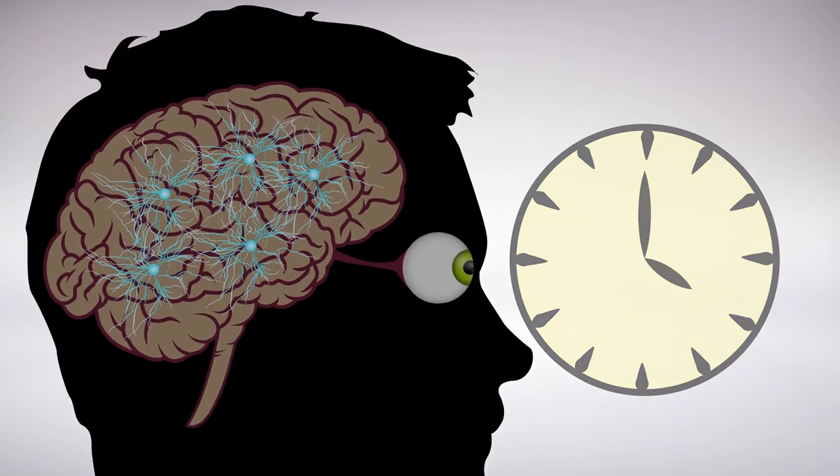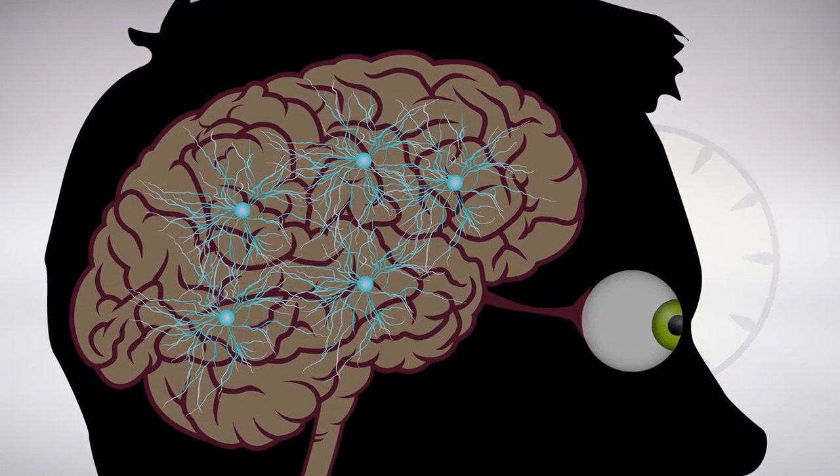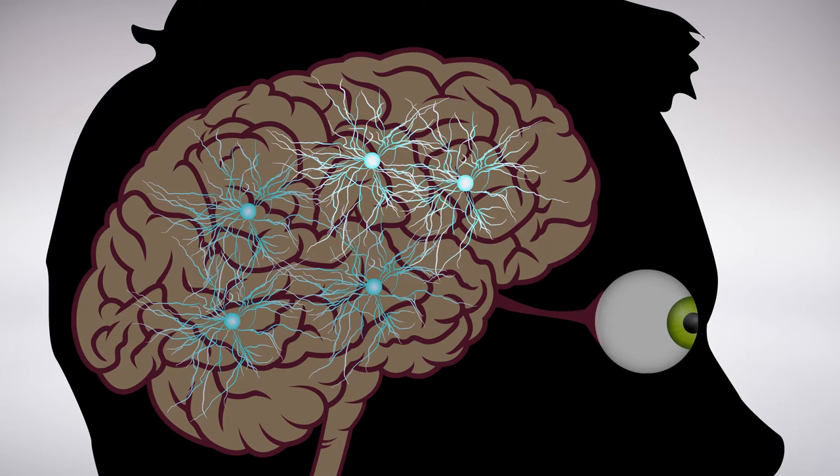But not all cells care about orientation to the same extent. Why are some cells sensitive to minute changes while others are only roughly aware? Researchers have now found an answer and in the process discovered a new type of computational power in neurons.